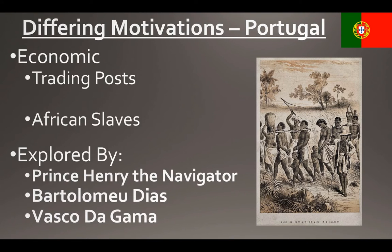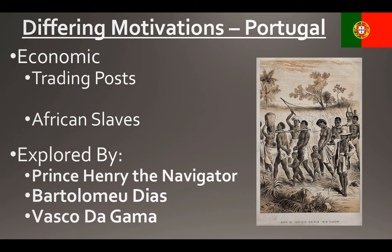The first nation we're talking about is Portugal, the first big group to really settle into exploration. They were economically motivated, setting up trading posts along the western coast of Africa. Three big explorers are Prince Henry the Navigator, who became the financier of exploration and technological innovation; Bartholomew Diaz, the first to reach the southern tip of Africa; and Vasco de Gama, who worked his way around the southern coast of Africa and ultimately to India. These Portuguese set up trading posts along the western African coast, which brought in African slaves and made them major players in the slave trade.